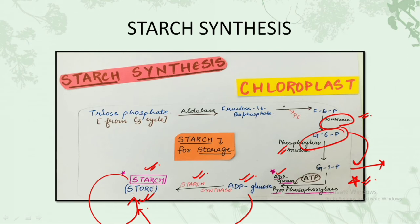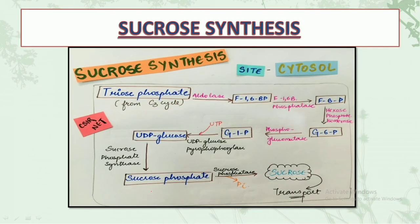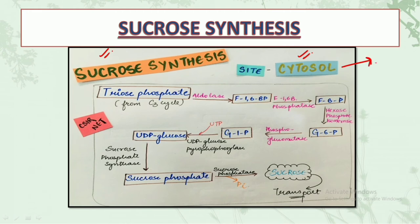Now talking about sucrose synthesis - almost the same steps occur, but the difference comes after glucose 1-phosphate. First, the site: starch synthesis occurs in the chloroplast, but sucrose synthesis occurs in the cytosol. The initial steps are the same: triose phosphate from the C3 cycle enters; aldolase converts it to fructose 1,6-bisphosphate; then the enzyme fructose 1,6-bisphosphatase acts to give fructose 6-phosphate.